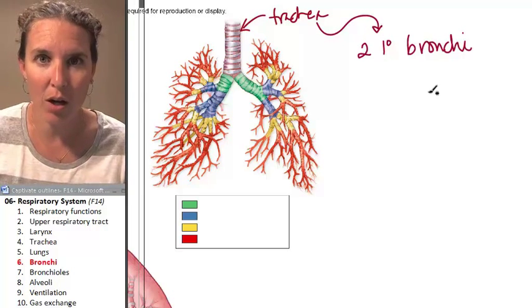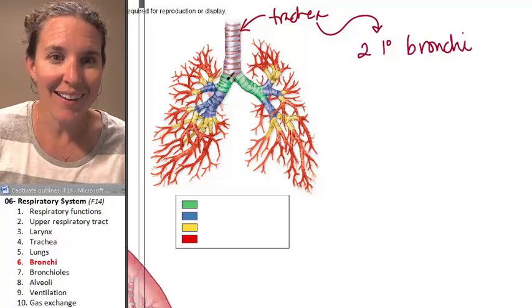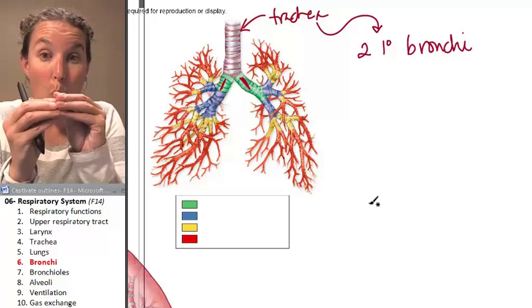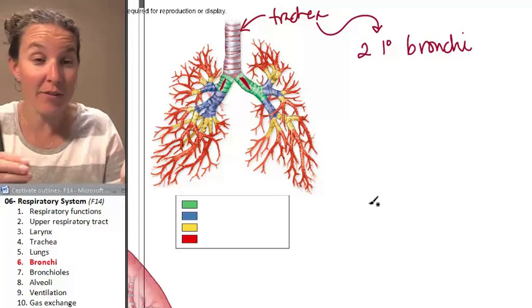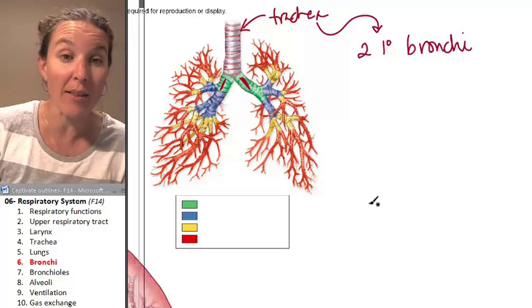Each primary bronchus—look, here are my primary bronchi. One branches into the left lung, one branches into the right lung. Done.